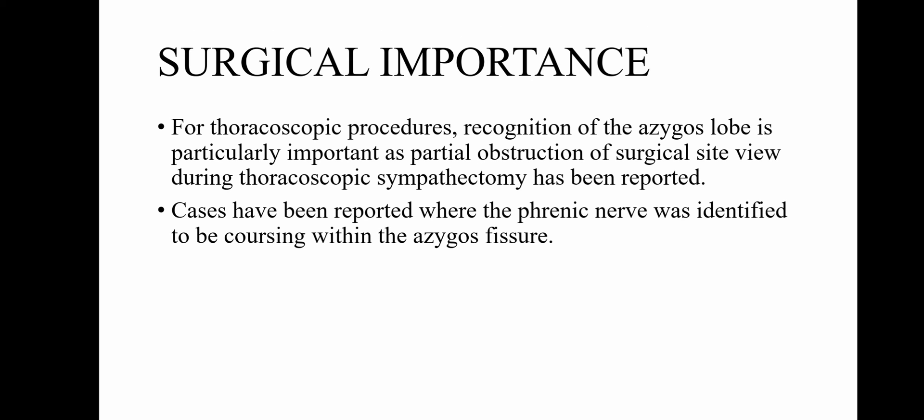For thoracoscopic procedures, recognition of the azygous lobe is particularly important, as partial obstruction of the surgical site view during thoracoscopic sympathectomy has been reported. Cases have been reported where the phrenic nerve was identified to be coursing within the azygous fissure.